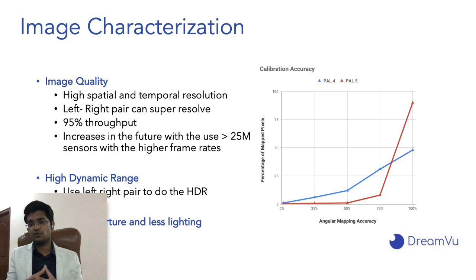In terms of image characterization, we have very high spatial and temporal resolution. We use the left and right pair to super-resolve images and get more than 95% throughput — the calibration is such that there is only about 5% pixel loss from the single image. As sensor resolution increases, the final image resolution increases proportionally. We also use the left and right pair for HDR with multiple coatings to create high dynamic range, because omnidirectional images typically suffer from these issues.